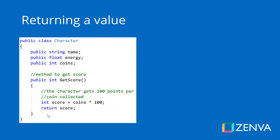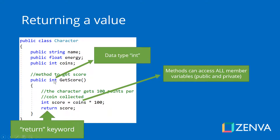For returning a value — the output of the factory — here's another method called getScore. That method creates a local variable of type integer inside it, and the value of that variable will be coins multiplied by 100, giving the character 100 points for every coin collected. Notice that we've typed int instead of void, meaning we are returning a variable of type int, and we return that value with the return keyword. Methods can also access all member variables, whether public or private.